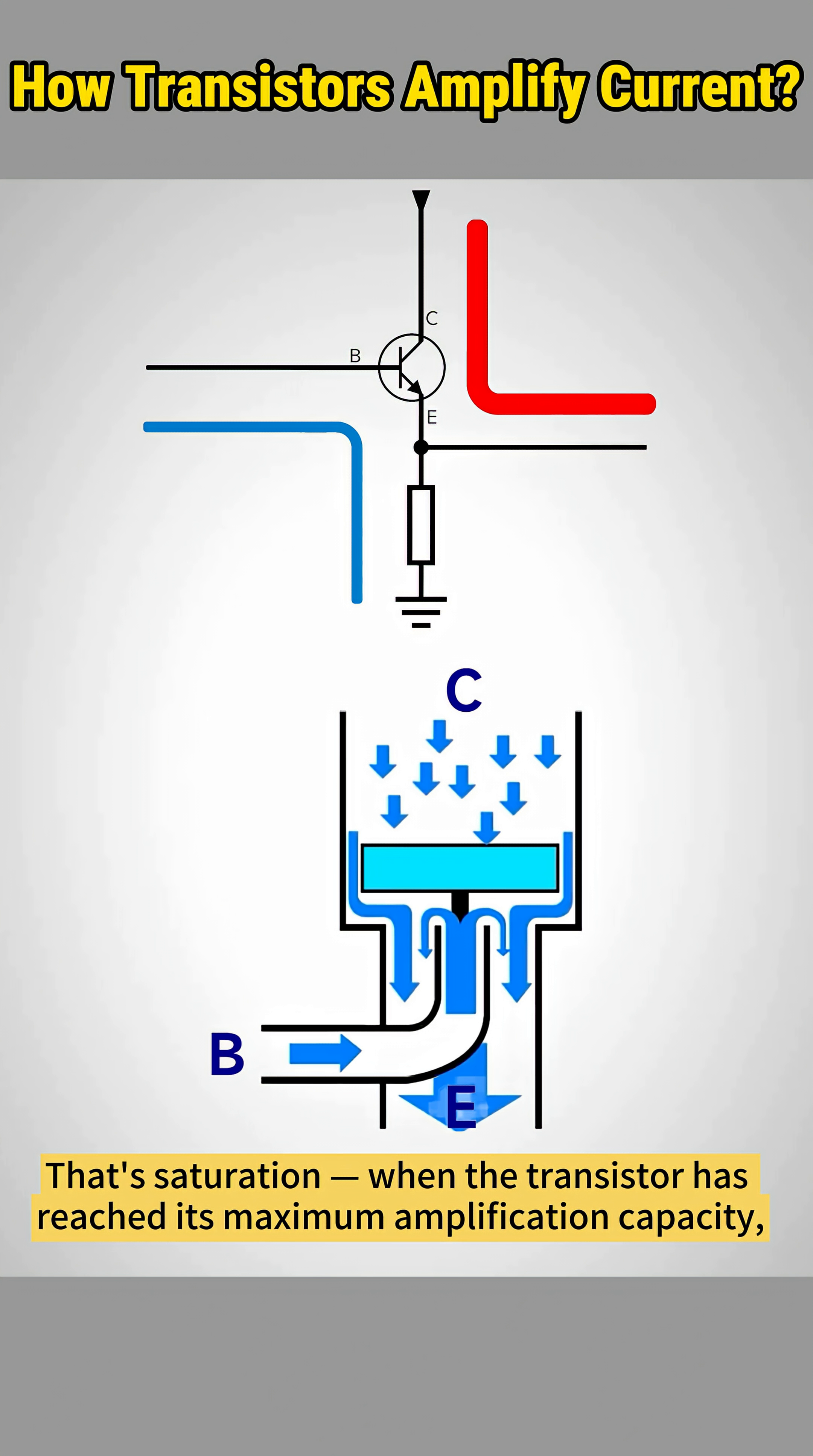When the transistor has reached its maximum amplification capacity, it behaves more like a closed switch than a linear amplifier.